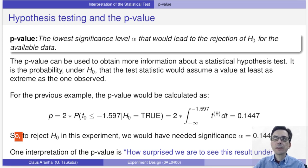One nice way to interpret the p-value is how surprised we are to see this result under the null hypothesis. The lower the p-value, the more surprised we are to see this result under the hypothesis.